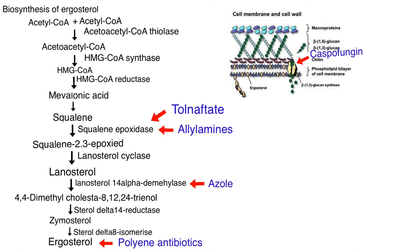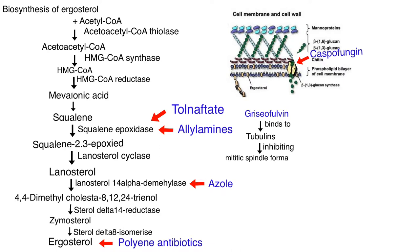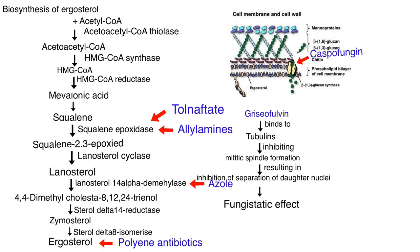The mechanism of action of heterocyclic benzofuran griseofulvin: the drug binds to tubulin, interfering with microtubule function, thus inhibiting mitosis or cell division. It also binds to keratin and makes it resistant to fungal infections. The drug reaches its site of action only when hair or skin is replaced by the keratin-griseofulvin complex.